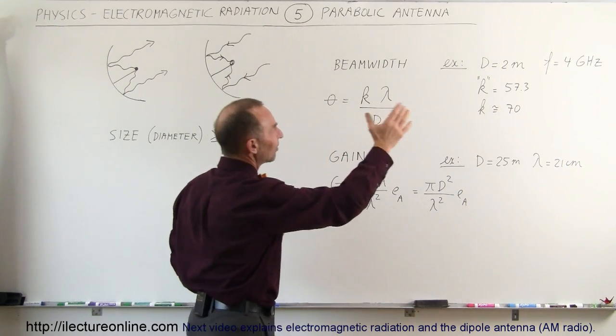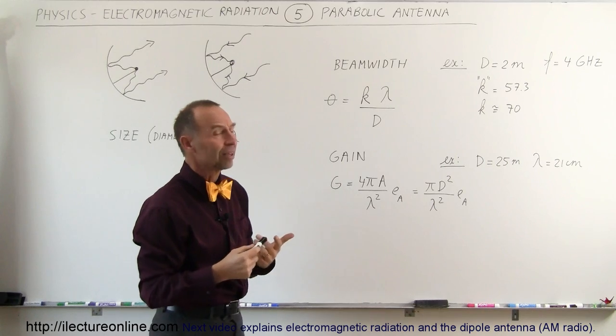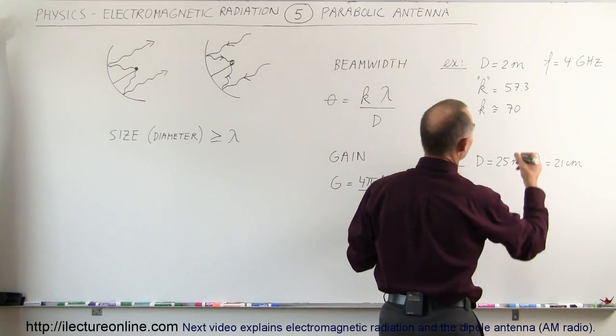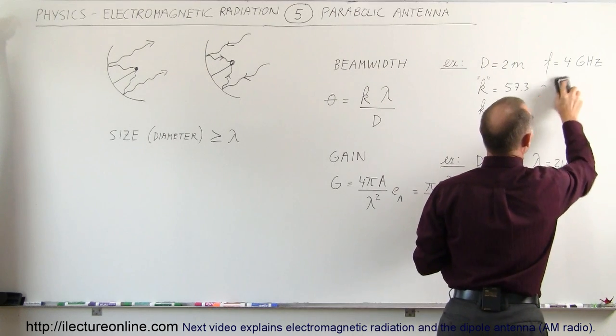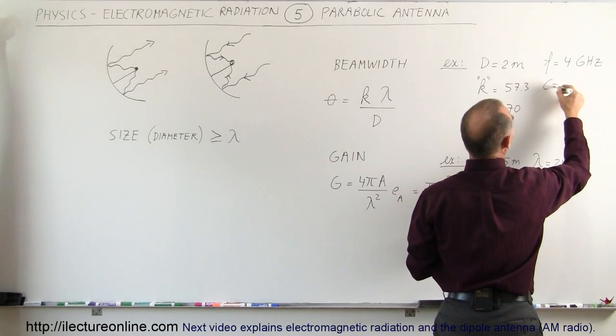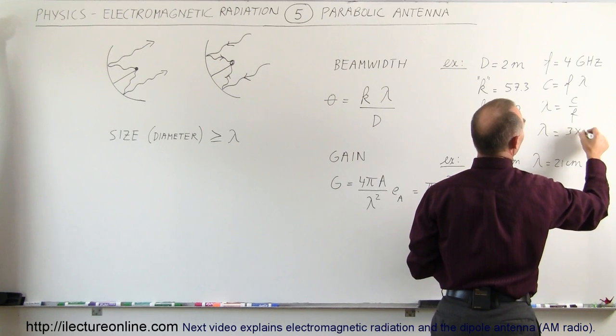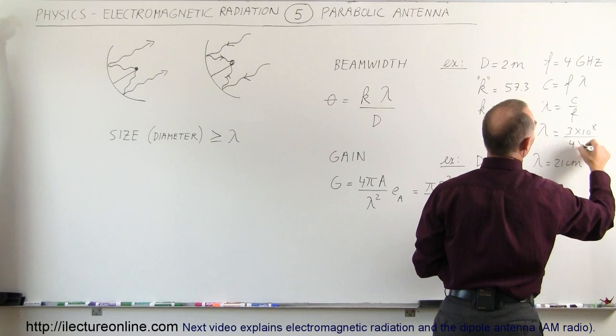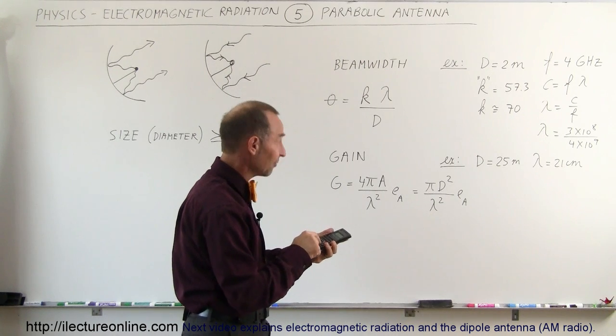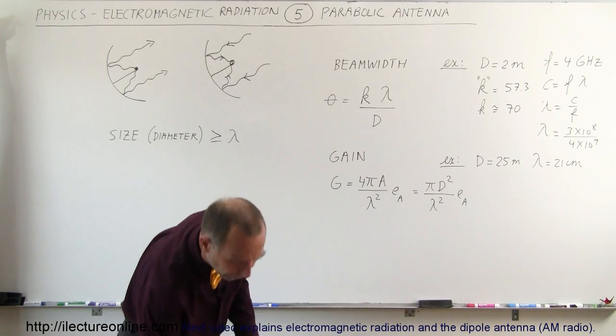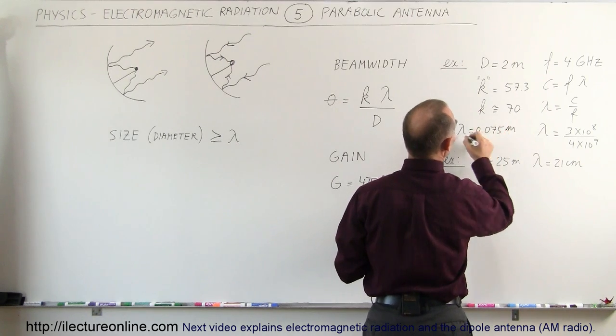If we want to calculate based on some numbers, let's say we have a two meter diameter antenna and we have a four gigahertz signal that we want to send. We have to first calculate the wavelength of a four gigahertz signal. The speed of light is equal to the frequency times the wavelength, so the wavelength is equal to the speed of light divided by the frequency. The wavelength equals three times ten to the eight meters per second divided by the frequency of four times ten to the ninth. That gives us 0.075 meters, which is 7.5 centimeters.